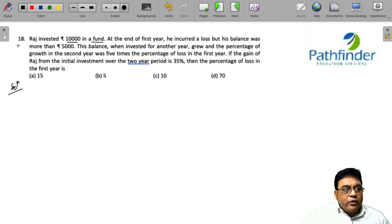CAD 2021 slot 2 question number 18. Raj invested rupees 10,000 in a fund. At the end of the first year he incurred a loss but his balance was more than 5,000 rupees. This balance when invested for another year grew and the percentage of growth in the second year was five times the percentage of loss in the first year. If the gain of Raj in the initial investment over the two year period is 35%, then the percentage of loss in the first year is: